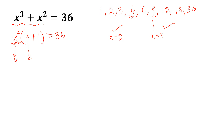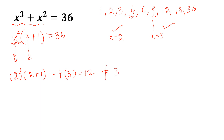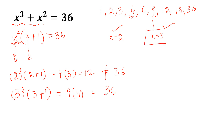Put x is equal to 2 here and we get 2 square into 2 plus 1. This is equal to 4 into 3, and this is 12, which is not equal to 36. Now we try the other number: 3 square into 3 plus 1. This is 9 into 4, and this is 36. So x is equal to 3 is the solution to this equation.